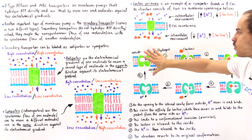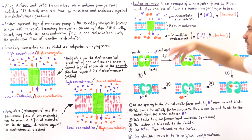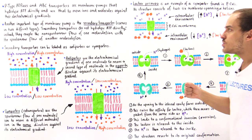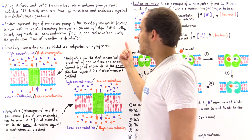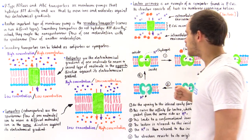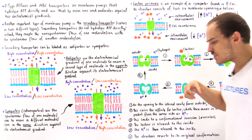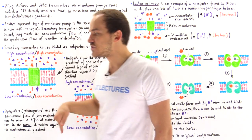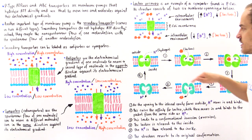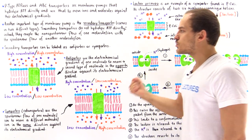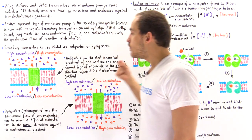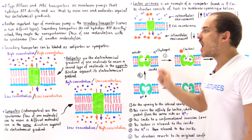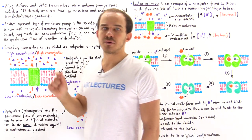Once it forms back this structure, the cycle can repeat itself. In this secondary transporter, the free energy released when the proton moves down its electrochemical gradient is used to drive the uphill movement of lactose against its electrochemical gradient.